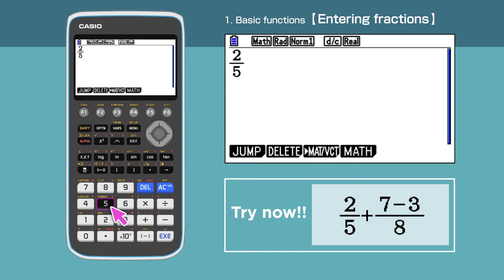Next, let's add another fraction. Move to the right of the cursor and enter plus. A fraction can include calculations in the numerator or denominator. Press 7 minus 3 for the numerator and enter 8 for the denominator.